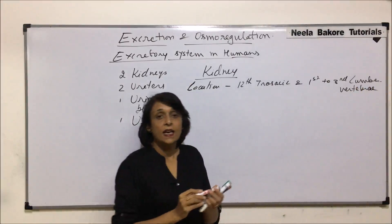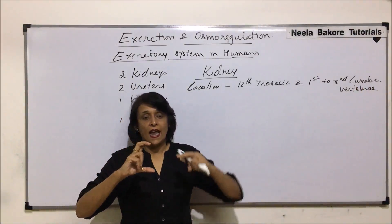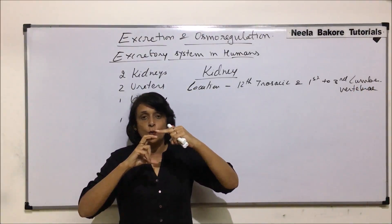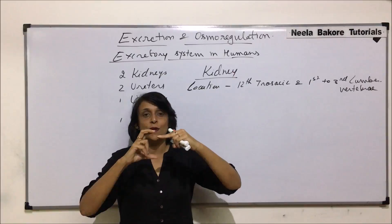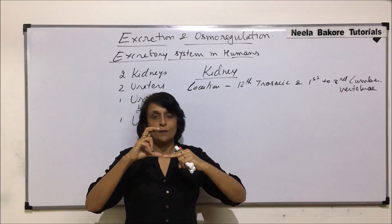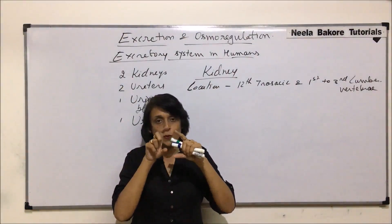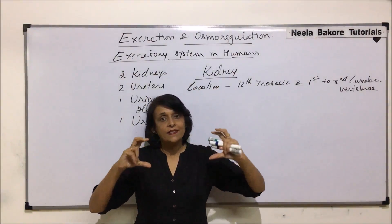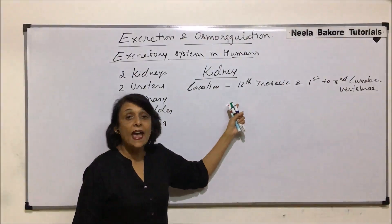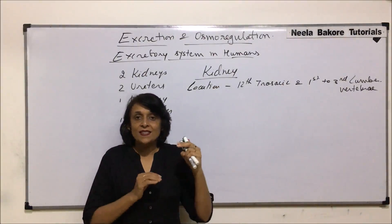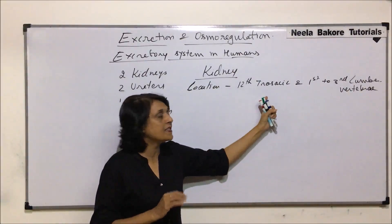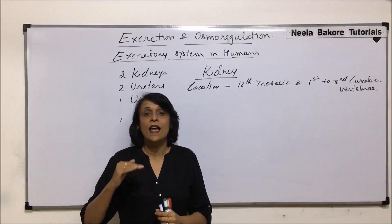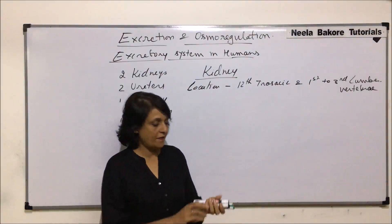That means, if this is the kidney, here is the last thoracic — the twelfth thoracic — then first lumbar, second lumbar, and third lumbar. On either side of the twelfth thoracic, first, second, and third lumbar, these kidneys are present. The left kidney is slightly higher, while the right kidney is slightly lower as compared to the left one.